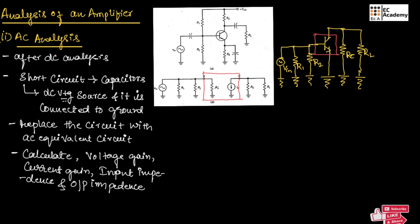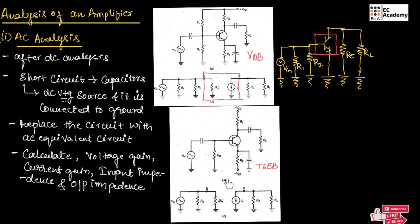This is how we can write the circuit for AC analysis. This is an example for voltage divider bias. This is also an example for a two-supply emitter bias amplifier. In this circuit, the capacitor is short-circuited and the DC voltage source is short-circuited and connected to ground. From this, we have written the AC equivalent circuit, from which we can calculate voltage gain, current gain, input impedance, and output impedance. This is about the analysis of an amplifier. Hope you have understood the topic. Thank you.